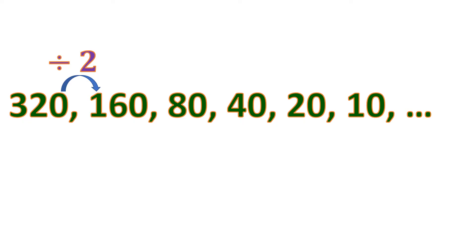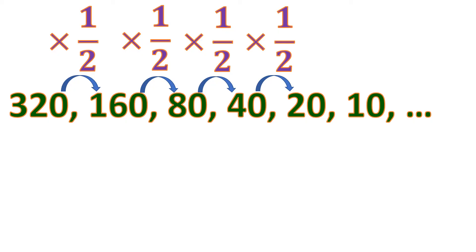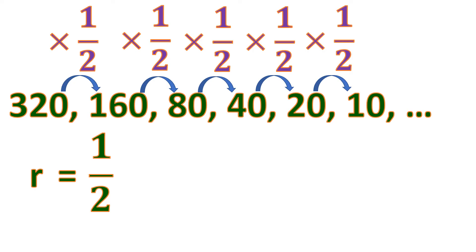In sequences, we don't write division — we simply use multiplication. Divided by 2 is the same as multiplying by one half. So to get 160 from 320, you multiply by one half. To get 80 from 160, multiply by one half. To get 40 from 80, multiply by one half. To get 20 from 40, multiply by one half. To get 10 from 20, multiply by one half. So the common ratio r equals one half, and since it has a common ratio, it is a geometric sequence.